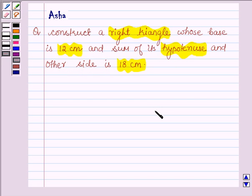So first let us draw a rough figure of how we are going to construct the triangle. Suppose this is triangle ABC. Here we are given that the base is 12 cm and AC plus AB is equal to 18 cm.